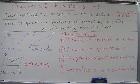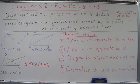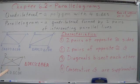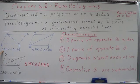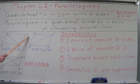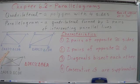One other thing you need to know about parallelograms: when they are cut by diagonals, they create four pairs of congruent triangles. For example, cutting with diagonal DB creates triangle ABD congruent to triangle CDB — that's one pair.